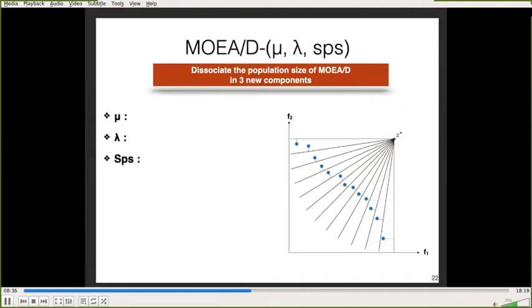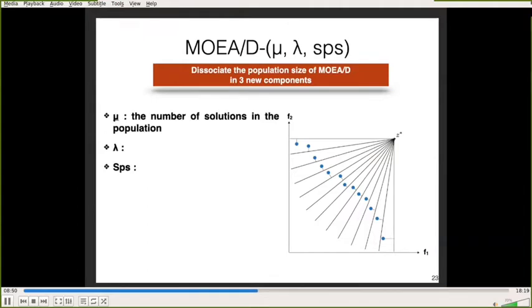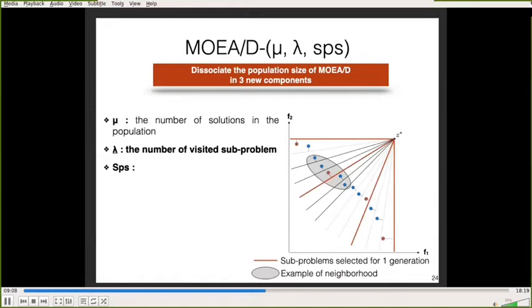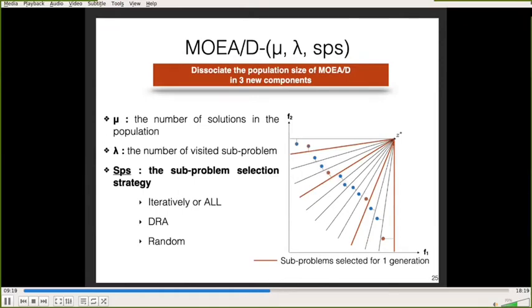In our paper, we review the design of the MOEAD framework by dissociating the population size into three new components. The first, mu, is the number of solutions in the population — the classic definition of population size in evolutionary algorithms. The second, lambda, is the number of solutions selected at each generation; instead of visiting all subproblems during one generation, we visit a sample. The third, SPS, is the strategy for selecting these lambda subproblems. We study three strategies: the classic MOEAD strategy of visiting all subproblems, the MOEAD DRA strategy using a priority function followed by tournament selection, and a random strategy.